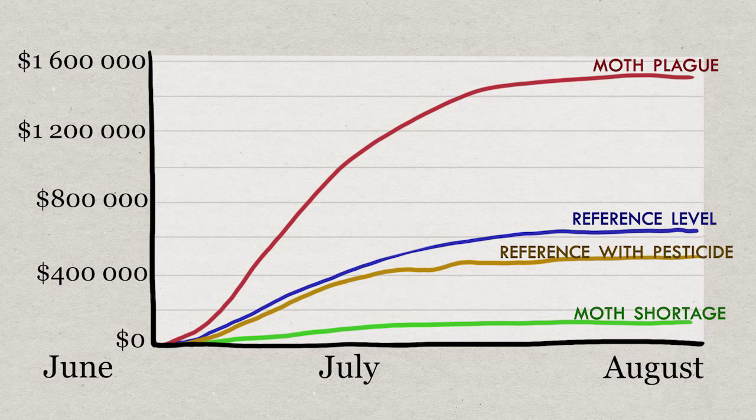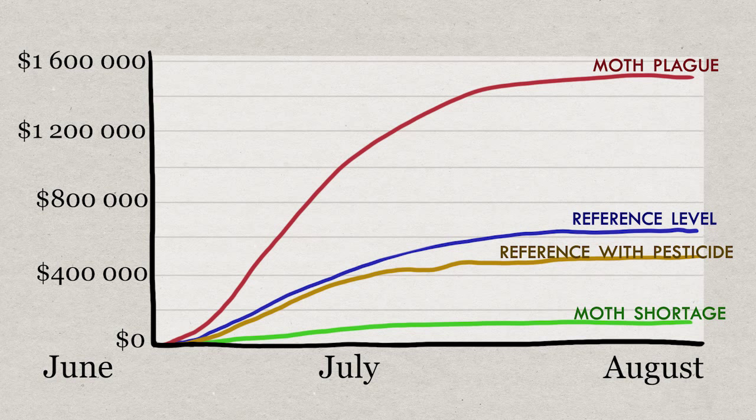The bats offer between 2 and 29% of avoided damages to the value of the crop, depending how bad the infestation is.